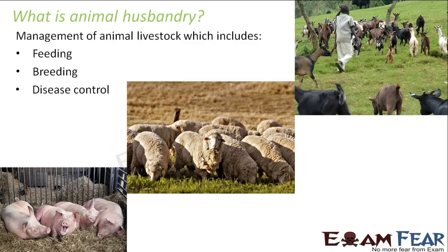In order to feed on animals, it is very necessary that proper care is taken of that particular animal. You need to feed the animal properly so it stays healthy. You need to take care of the breeding — meaning reproduction — so that they reproduce correctly and give a good product. Disease control is also essential, because diseased animals can in turn cause disease when consumed by humans.